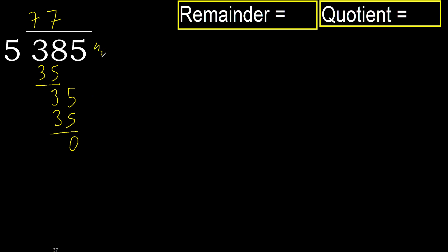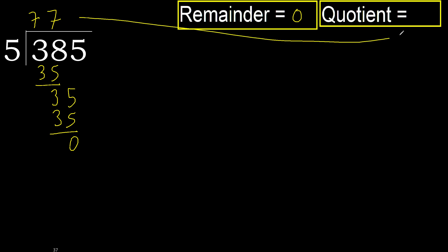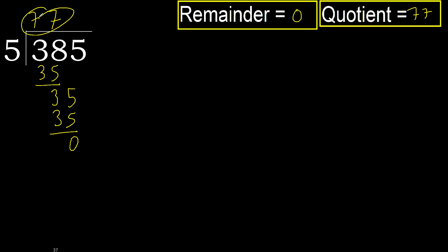That is not a number, therefore finish it. Ok, 385 divided by 5 is 77.